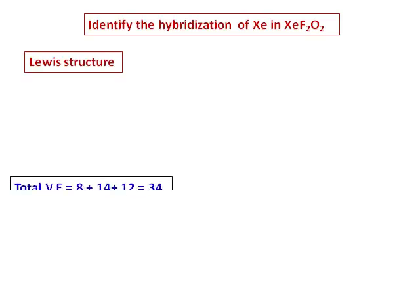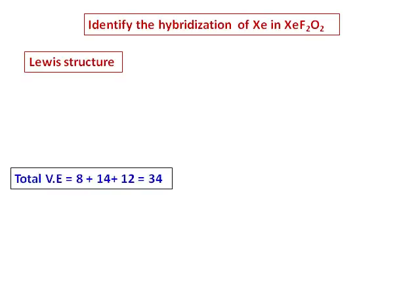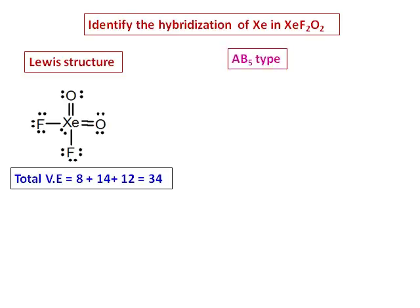This molecule has 34 valence electrons, and the Lewis structure will have four bonds and one lone pair, making it an AB5 type of molecule.